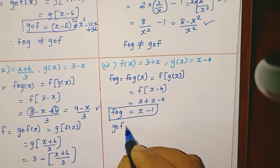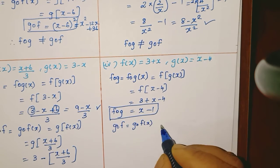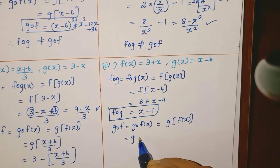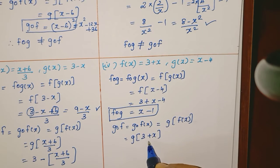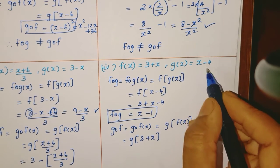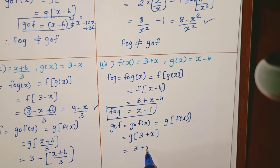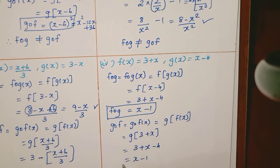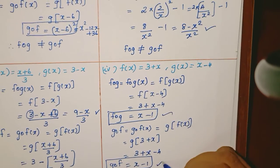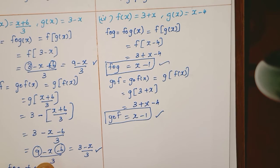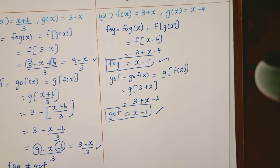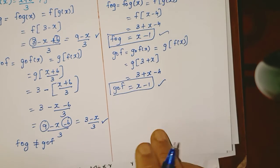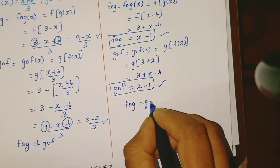Next, g composition f of x equals g of f of x. Here f(x) = 3 plus x. This 3 plus x becomes the input to g. Function g is x minus 4. Wherever x appears, replace with 3 plus x. So g(f(x)) = (3 plus x) minus 4. The constant terms: 3 minus 4 gives minus 1, so g composition f = x minus 1. Both f∘g and g∘f are equal in this case! So f composition g equals g composition f here.